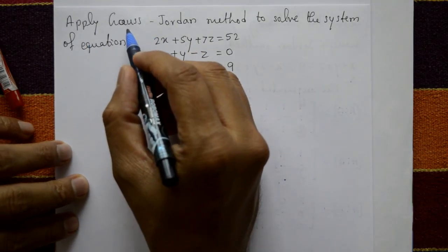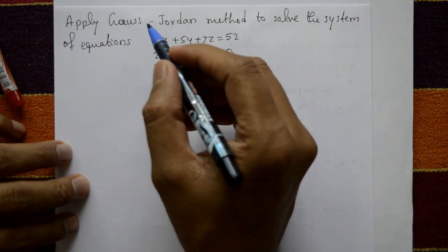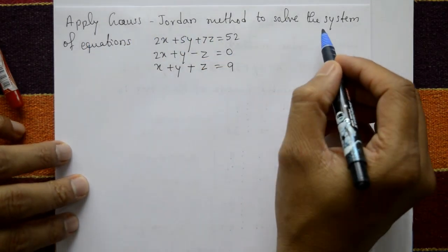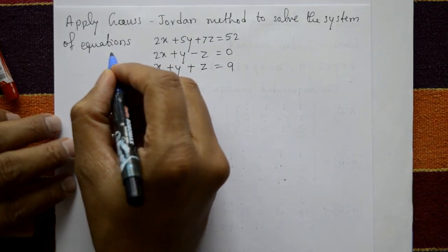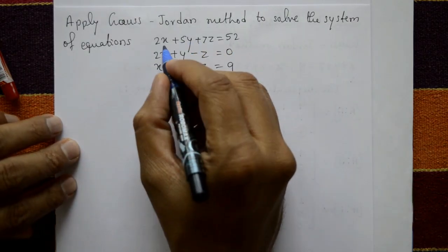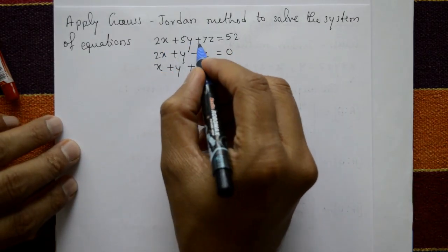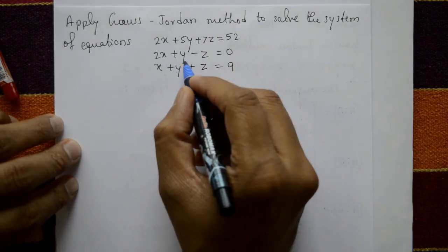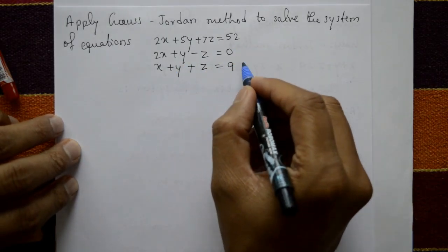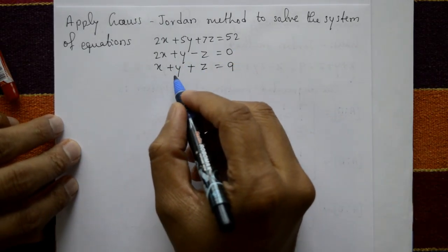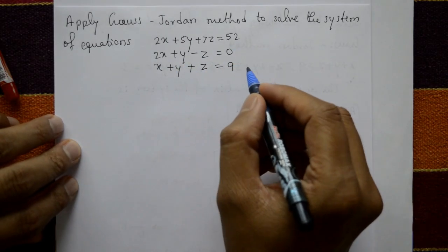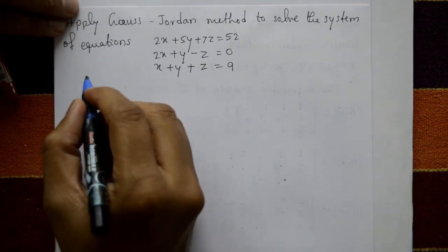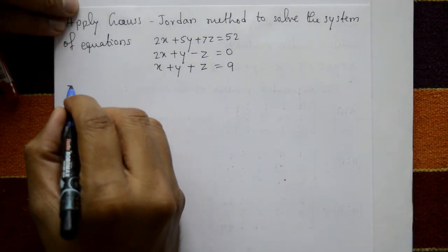Apply the Gauss-Jordan method to solve the system of equations: 2x + y + 7z = 52, 2x + y - z = 0, x + y + z = 9.